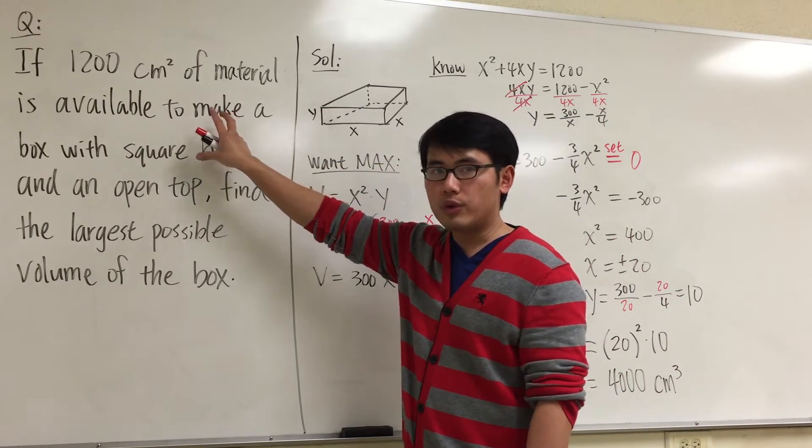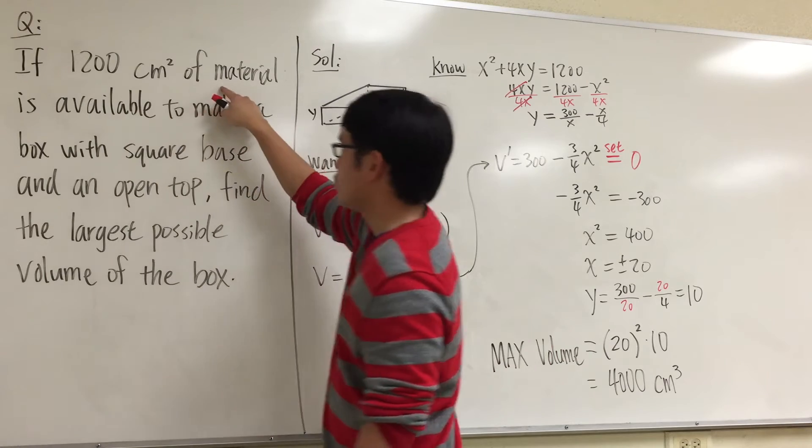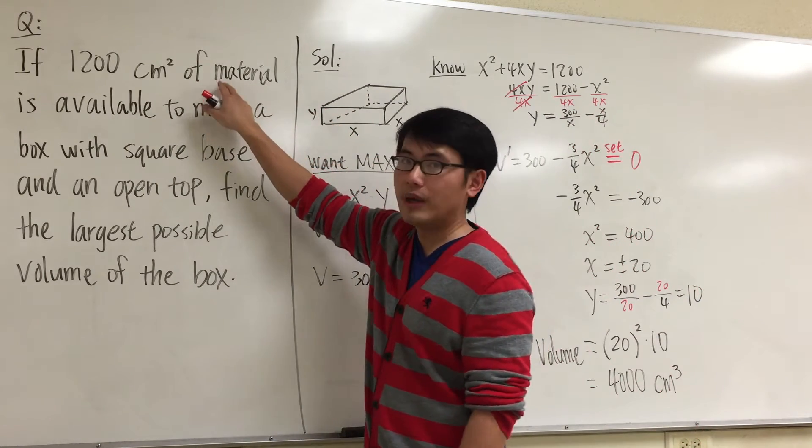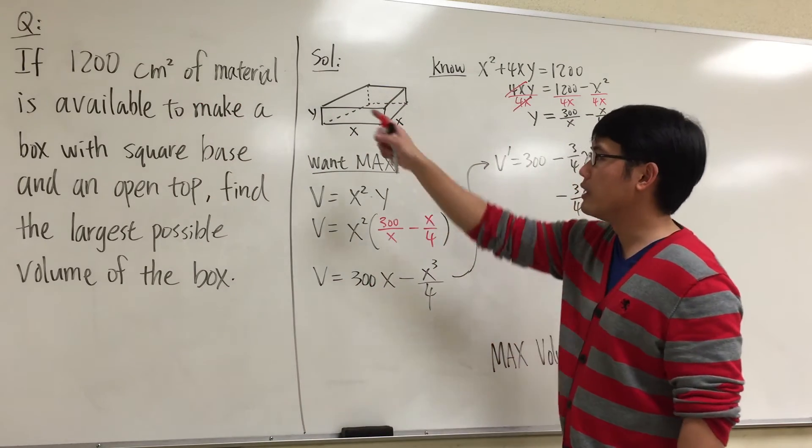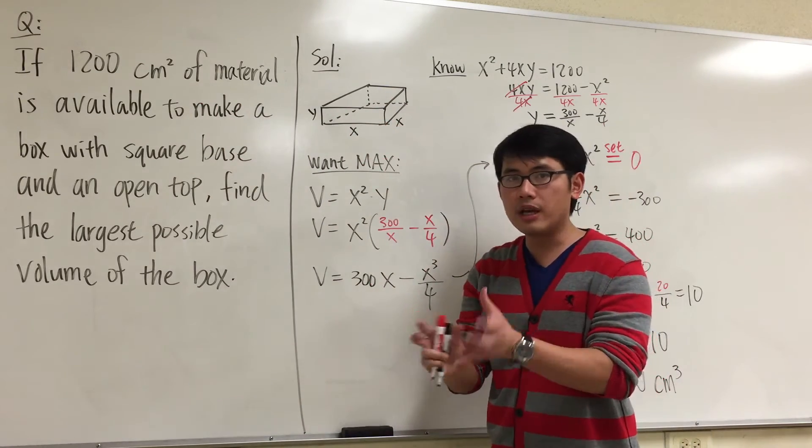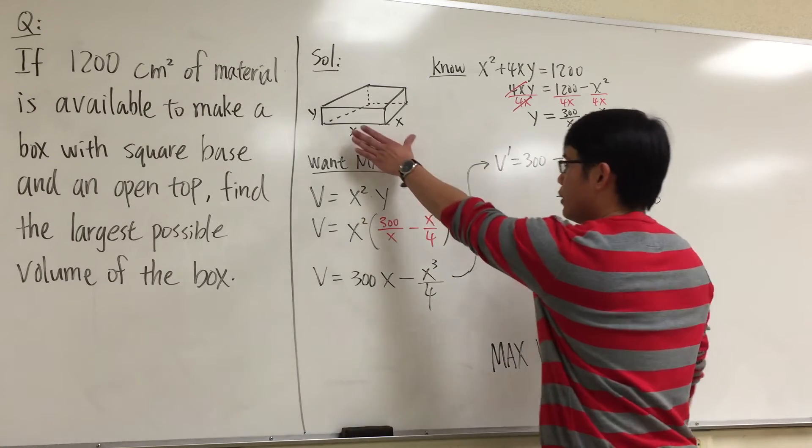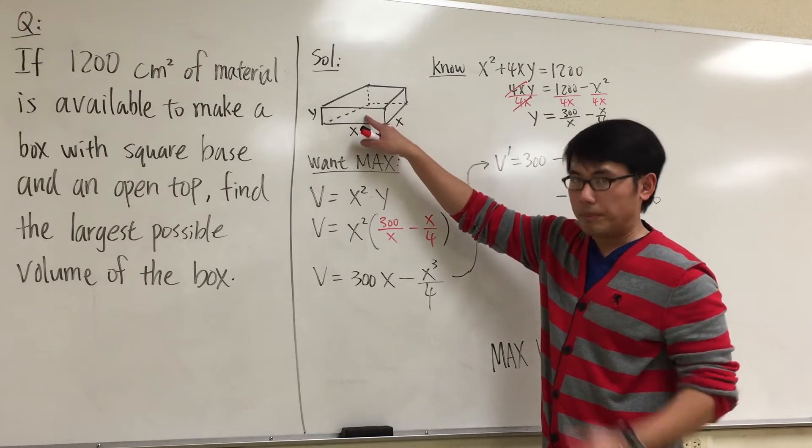Let's refer back to the original situation. It says 1200 centimeters square of material. What does that mean? That means we have to have the surface area for the box. The material is a surface area of the things that we can use to construct the box.